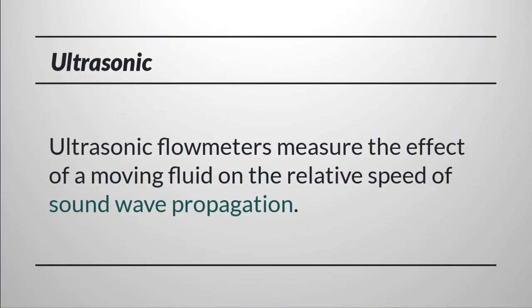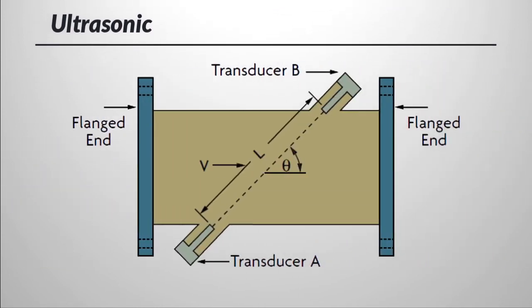Ultrasonic flow meters measure fluid velocity by measuring the effect a moving fluid has on the speed of sound. Transit time, or time of flight, meters measure the phase shift between upstream and downstream transducers and are used primarily with clean liquids and gases. Doppler effect meters rely on a single transceiver and measure the frequency shift of sound waves reflected from suspended particles or bubbles within the flowing stream.